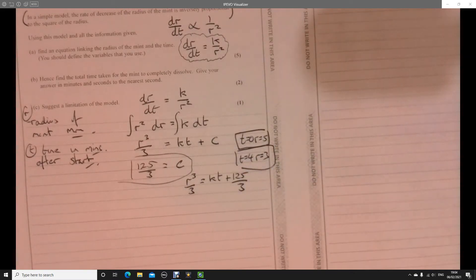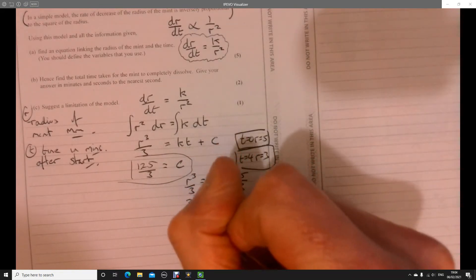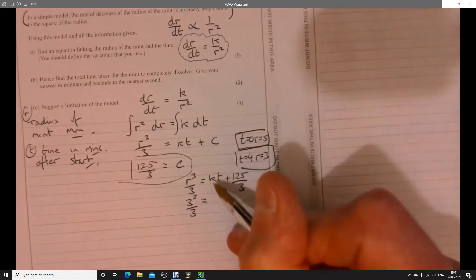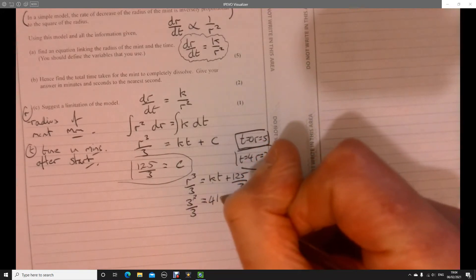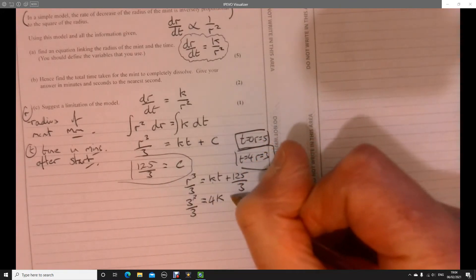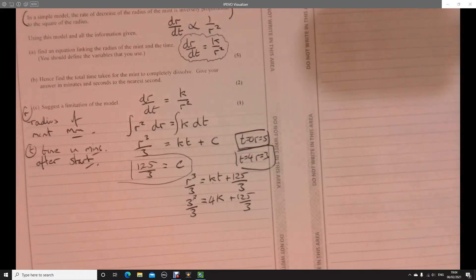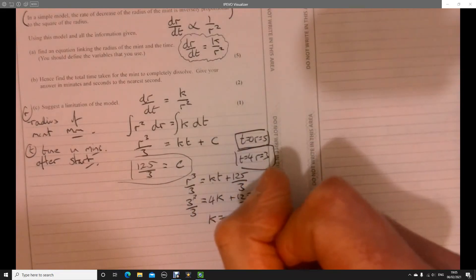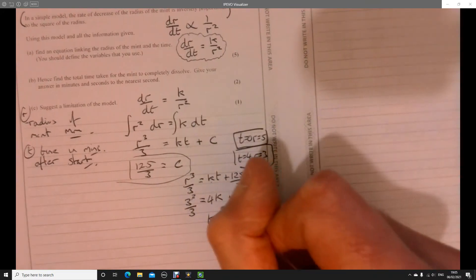Now, let's pop this information in here. So R is 3. So 3 cubed over 3 equals. Now, the K is a bit that we're trying to work out, but time is 4. So it'd be 4K plus 125 over 3. So a little bit of rearranging. If we take this away from both sides and divide by 4, K then works out to be minus 49 over 6.